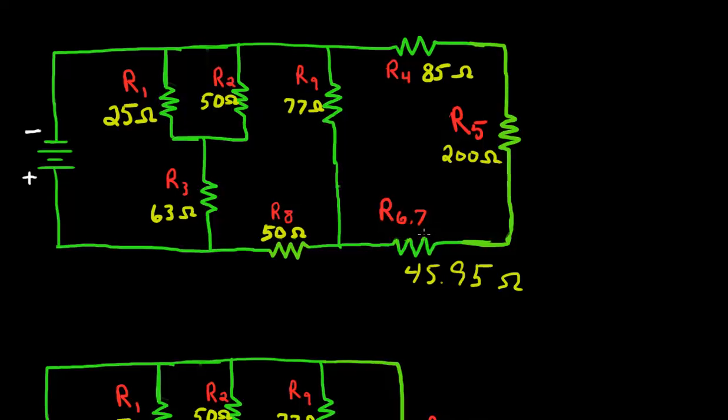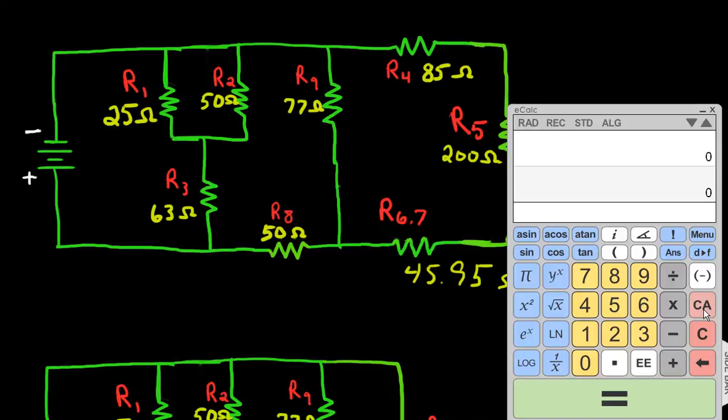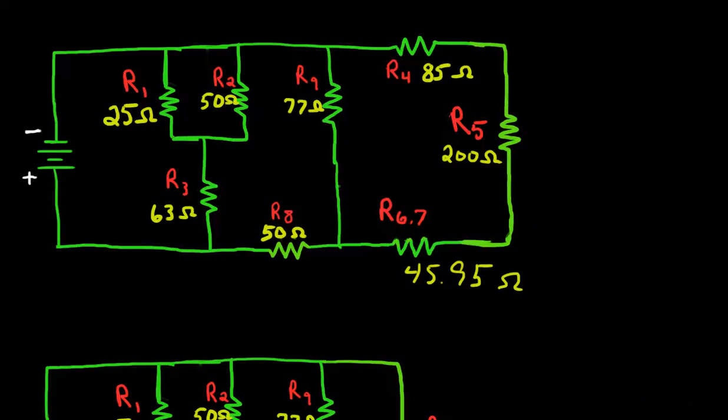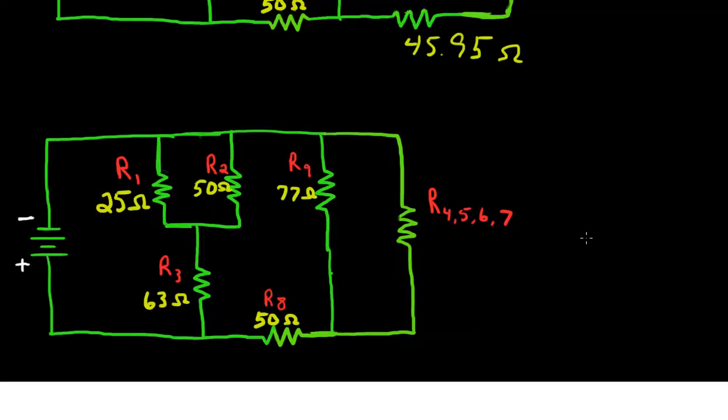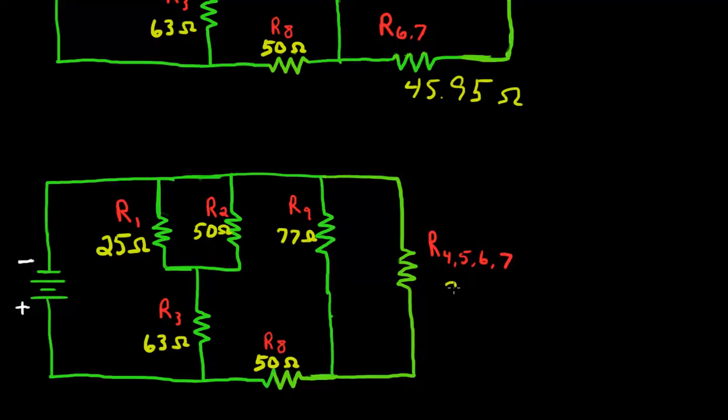So that's our next step. R4, R5, and R67, since this is basically a series circuit here in this branch, we have three resistors connected in series. To get that resistance, of course we treat it as if it's a series circuit. So we just add the resistance values together. We have 85 plus 200 plus 45.95 ohms. We're at a grand total of 330.95. So we have 330.95 ohms for this resistor value.